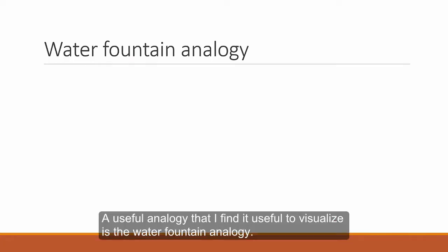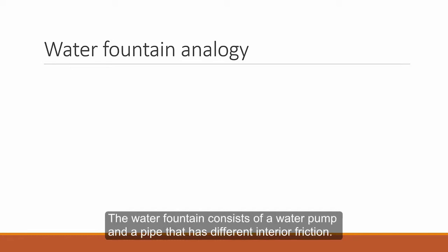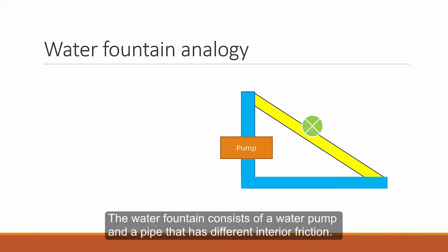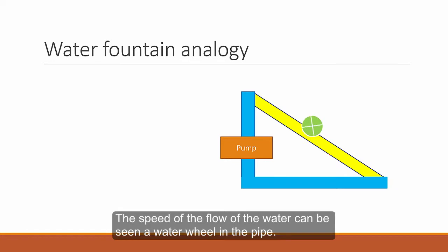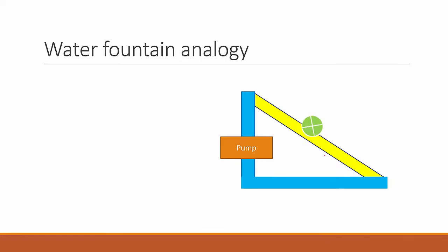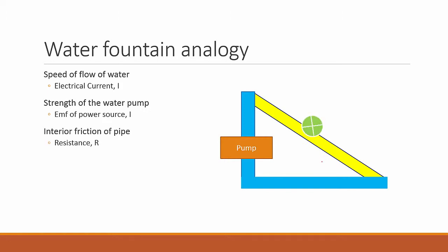An analogy that I find useful to visualize is using the water fountain analogy. The water fountain comprises of a water pump and a pipe that has different interior friction. And the speed of the flow of the water can be seen by a water wheel in the pipe. The flow represents the electrical current. The power of the water pump represents the EMF of the battery. And the interior pipe friction represents the resistance of the circuit.